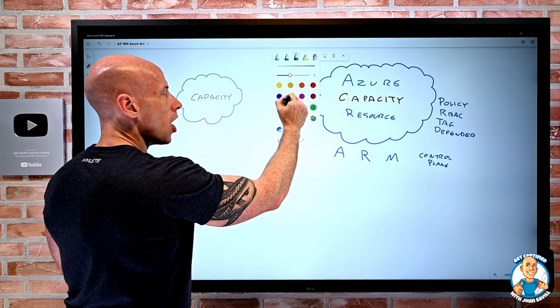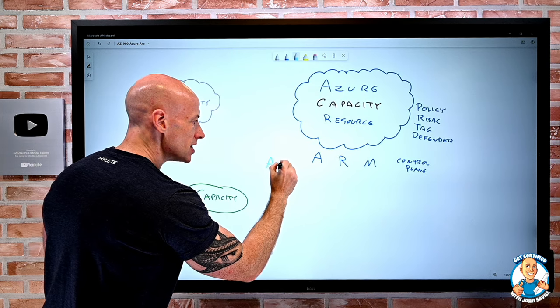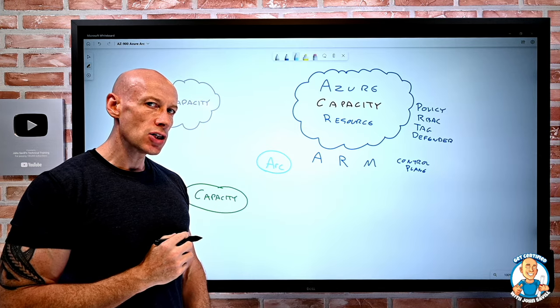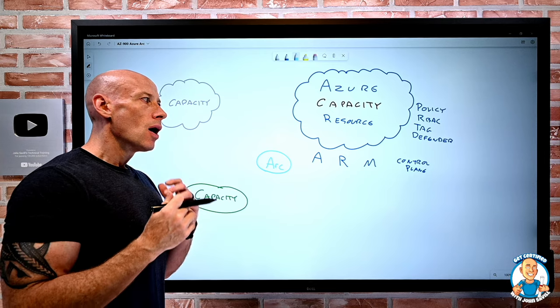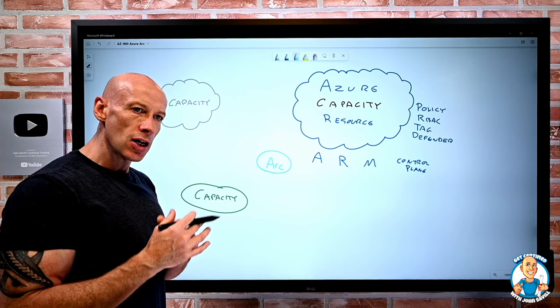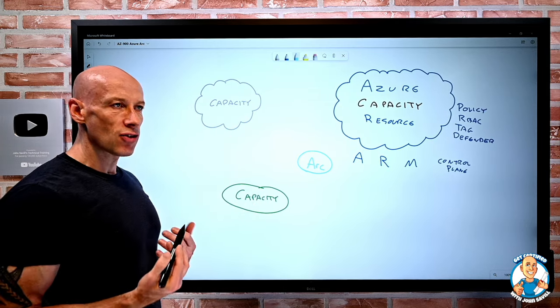So the whole point of Azure Arc is Arc is going to extend this control plane of Azure to services outside of Azure. I'm going to bring this control plane, this governance set of capabilities, to other things. And this could be on-premises, this could be in other clouds.